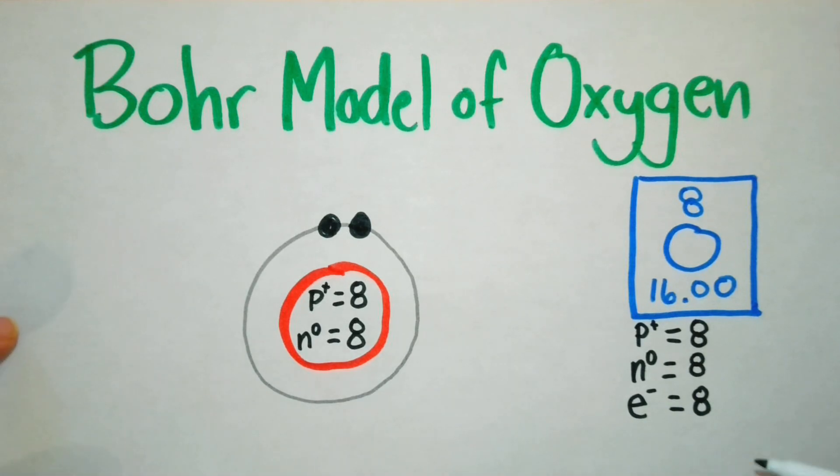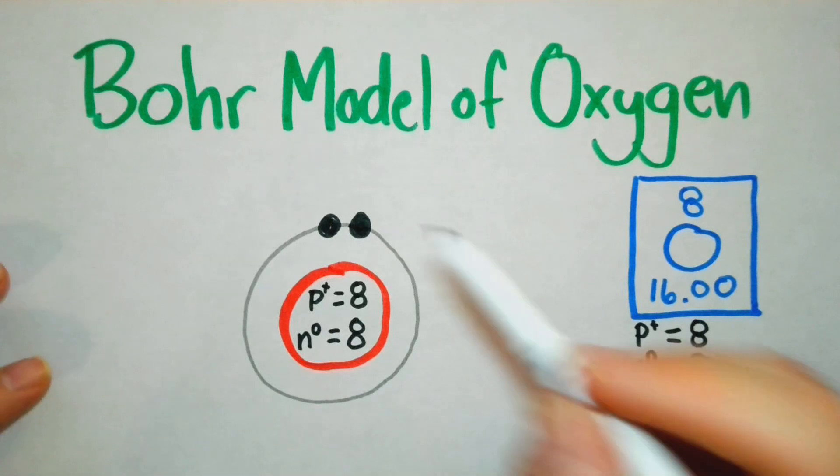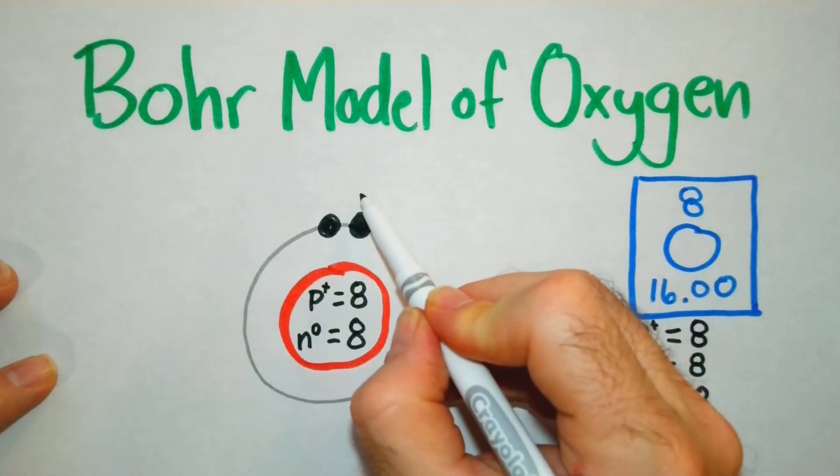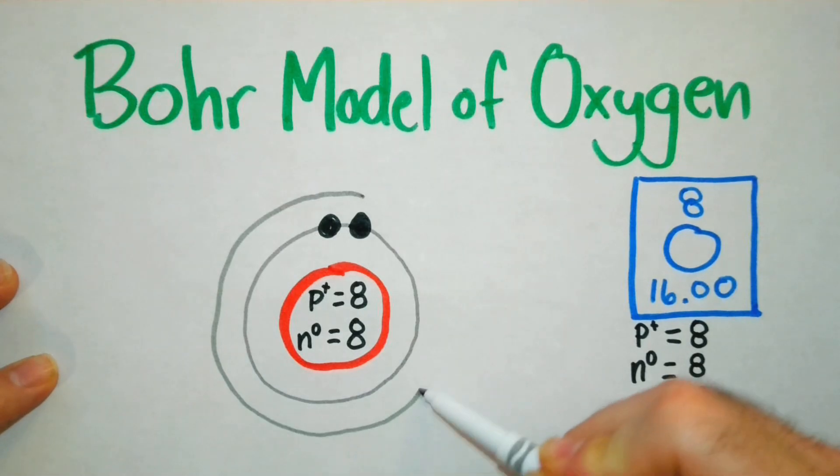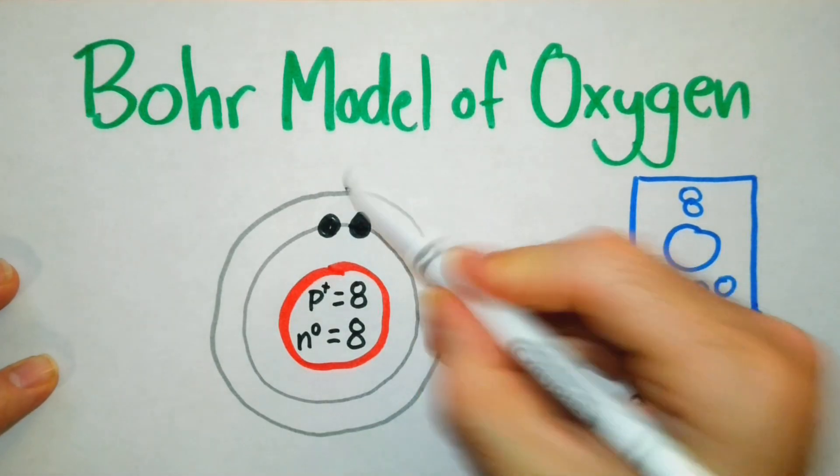Now we have six more electrons that we're going to need to put in our Bohr model. So we're going to draw another orbital or another shell.